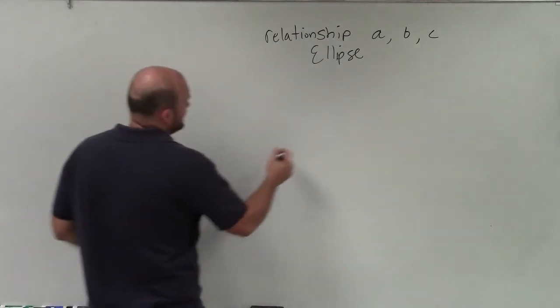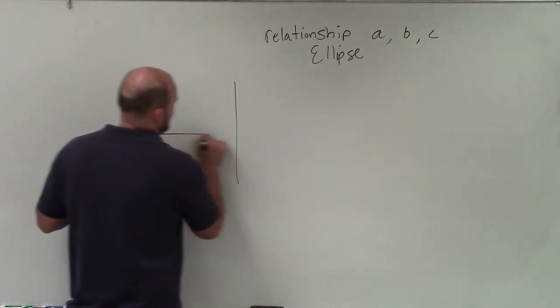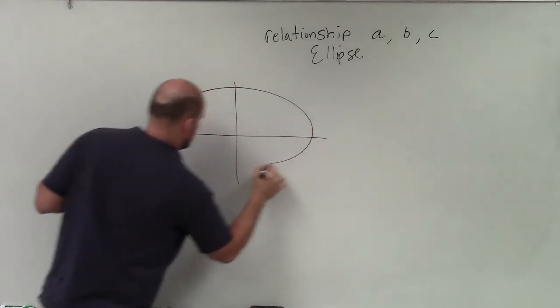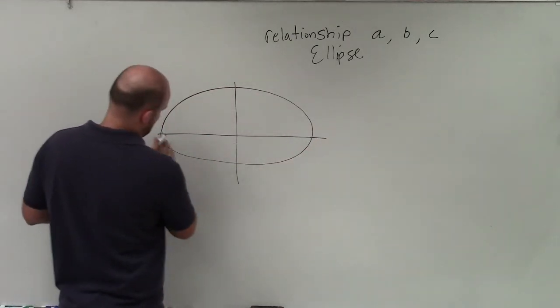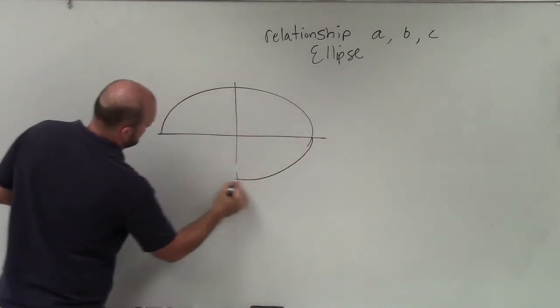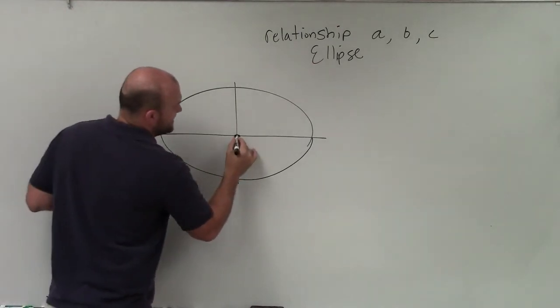Now, when we're looking at an ellipse here, let's just look at one that's a horizontal one, OK? Now remember, ooh, that one's a little rough, isn't it?